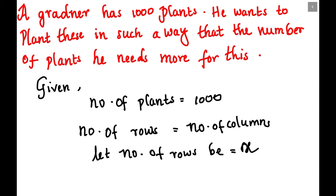So for finding how many plants we need more, we have to just multiply the number of rows into number of columns so we will know how many more plants we need.